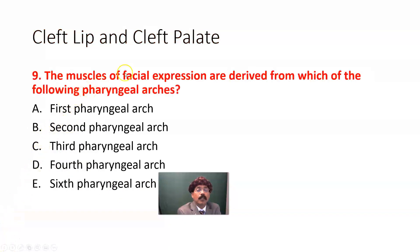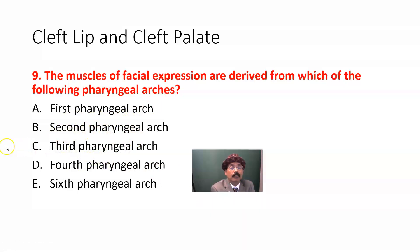Question nine: The muscles of facial expression are derived from which of the following pharyngeal arches? First pharyngeal arch, second pharyngeal arch, third pharyngeal arch, fourth pharyngeal arch, sixth pharyngeal arch. The answer is the second pharyngeal arch.